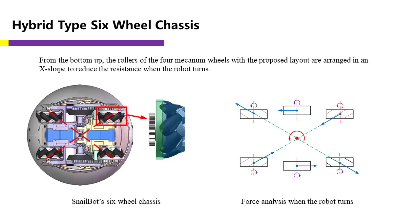We also propose a hybrid six-wheel chassis design. The front and rear four wheels are mecanum wheels, and the middle wheels are ordinary wheels. From the bottom up, the rollers of the four mecanum wheels with the proposed layout are arranged in an X-shape to reduce the resistance when the robot turns.